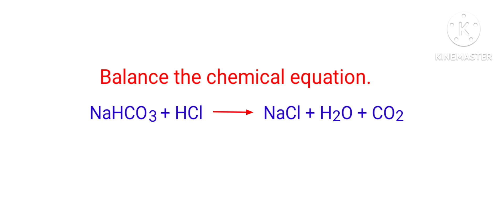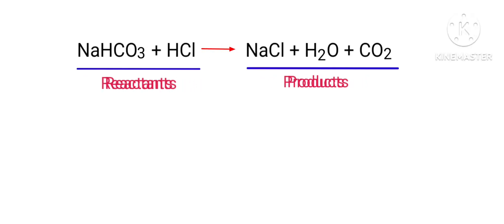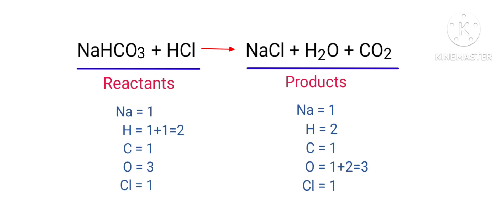Balanced chemical equation: Sodium bicarbonate plus hydrogen chloride gives us sodium chloride plus water plus carbon dioxide. In this equation, the reactants are sodium bicarbonate and hydrogen chloride, and the products are sodium chloride, water, and carbon dioxide.